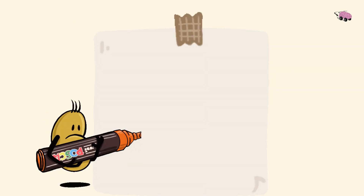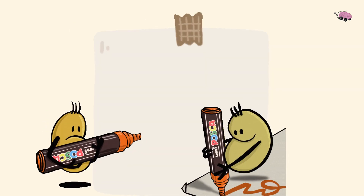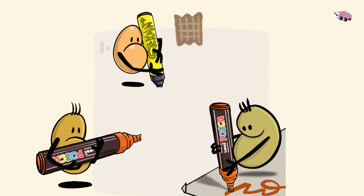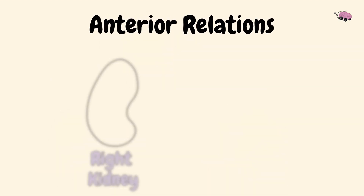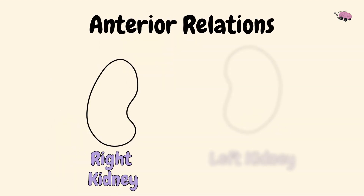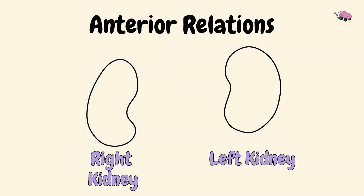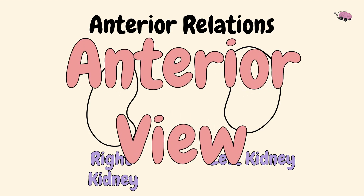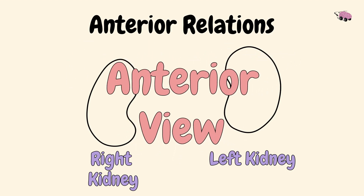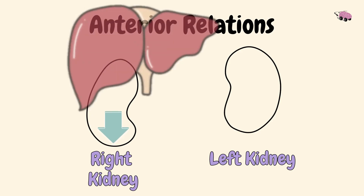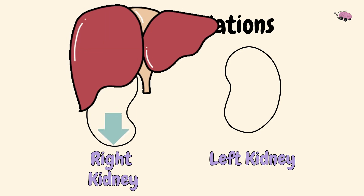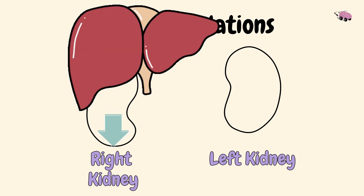Now don't be lazy — go grab some colored markers and paper. Let's first start drawing the two right and left bean-shaped figures seen from the anterior view. Notice that the right kidney is slightly lower, because the really big liver above is pressing the kidney down.